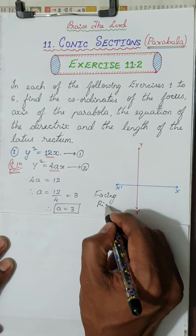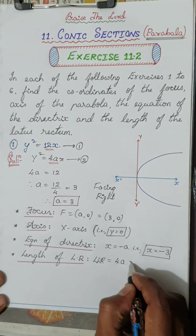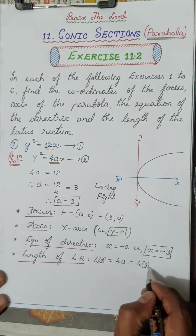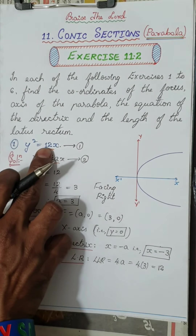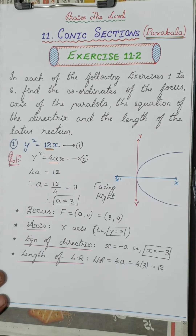The axis of the parabola is simply the x-axis, with equation y = 0. Equation of the directrix: it will be a line perpendicular to the axis, so x = -a = -3. Length of latus rectum (LLR) = 4a = 4 × 3 = 12. In fact, the coefficient of x in the given equation directly gives the length of the latus rectum.